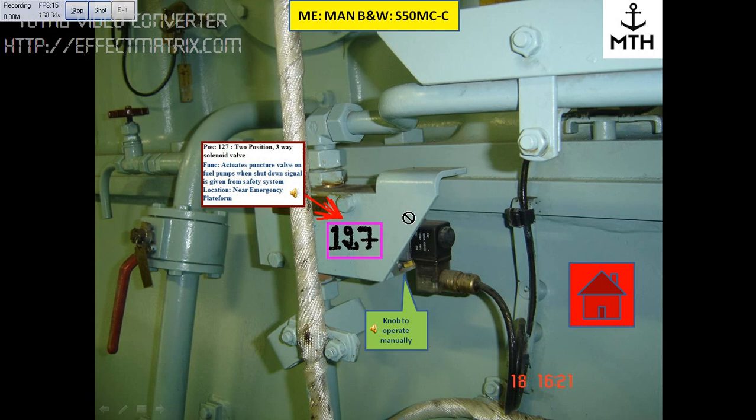If I click icon it will tell what it is. Let's click it. This block is position number 127 and it is a 2-position 3-way solenoid valve. The function of this solenoid valve is to activate the puncture valve on the fuel pump when a shutdown signal is given from the safety system.